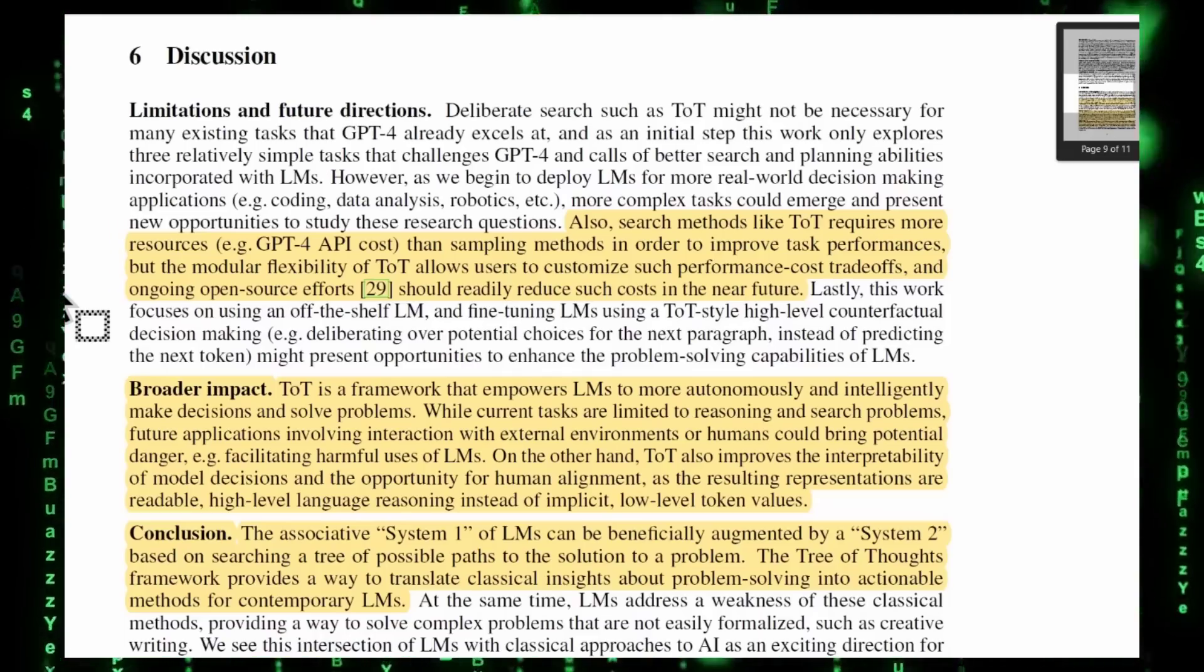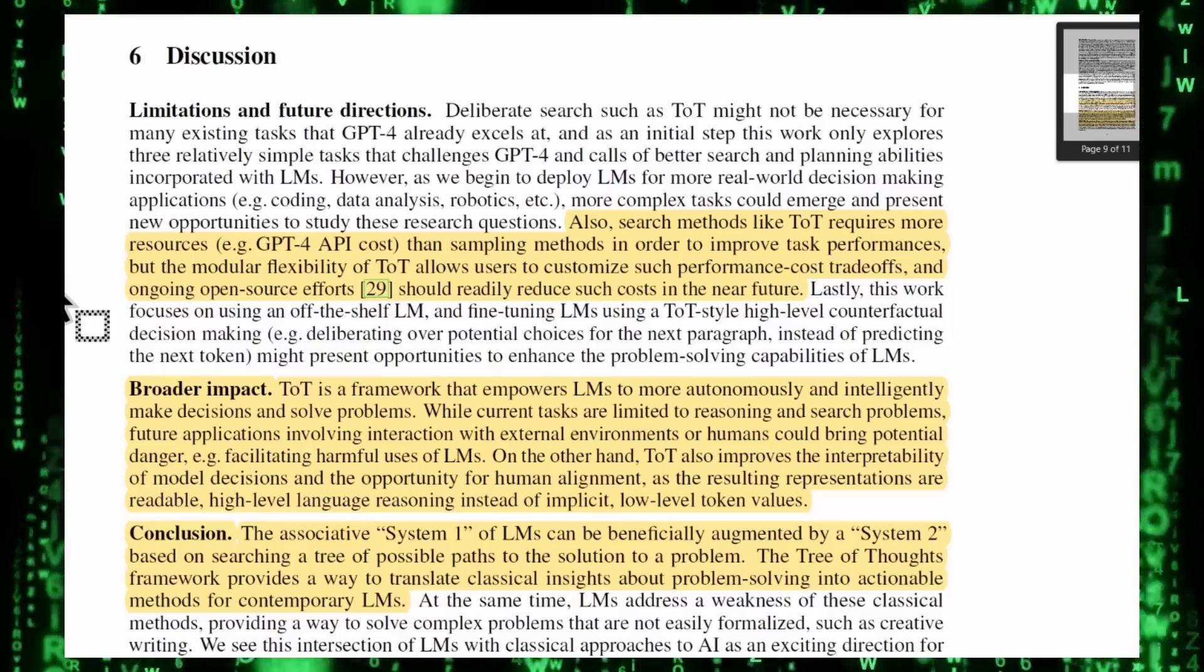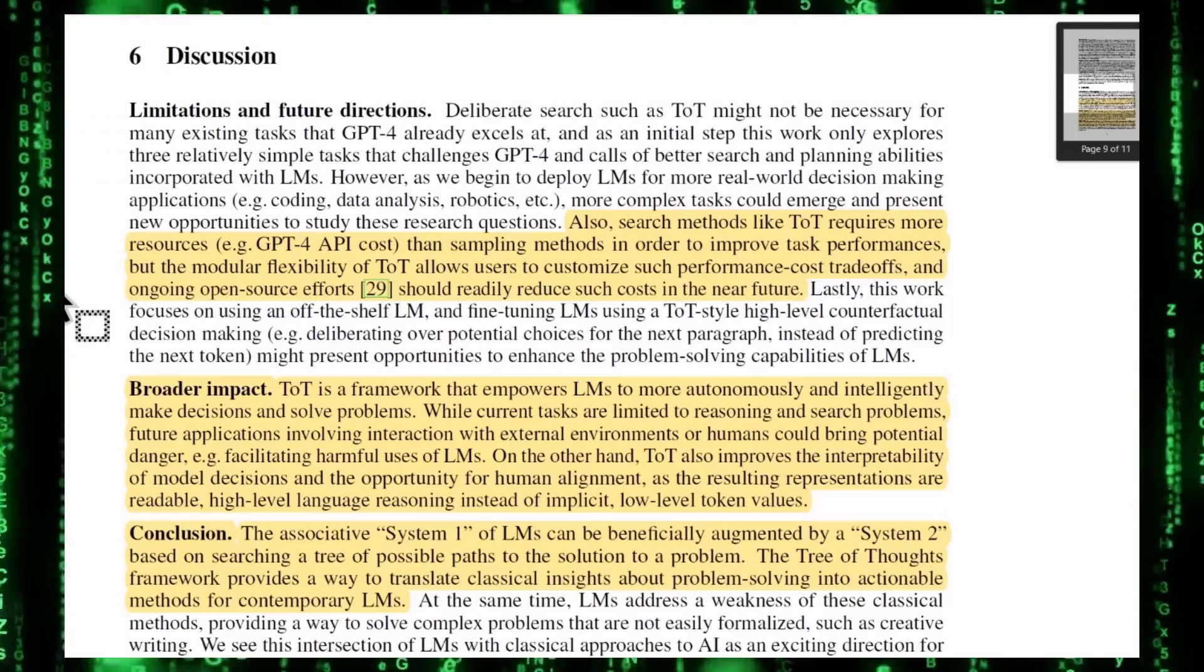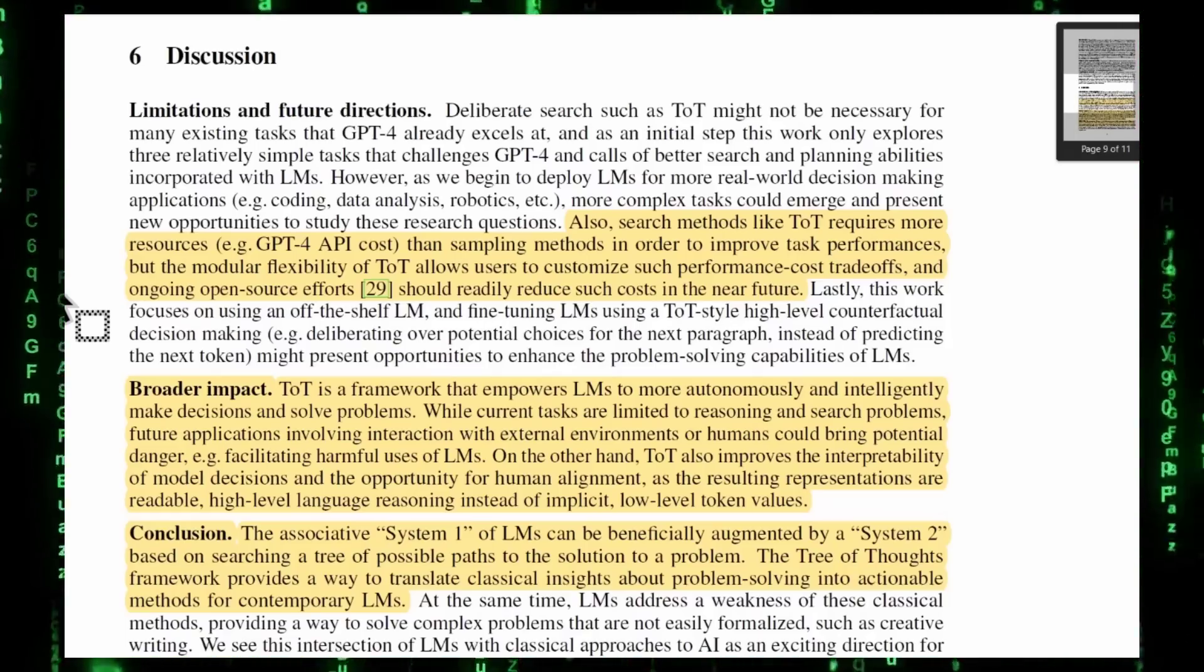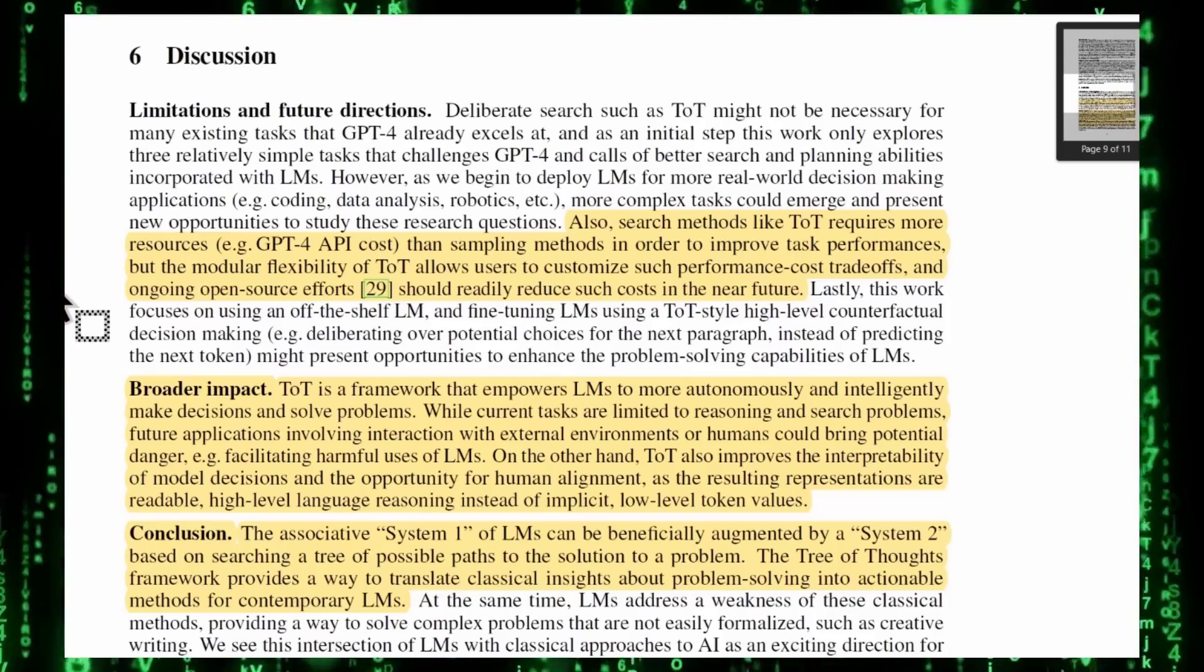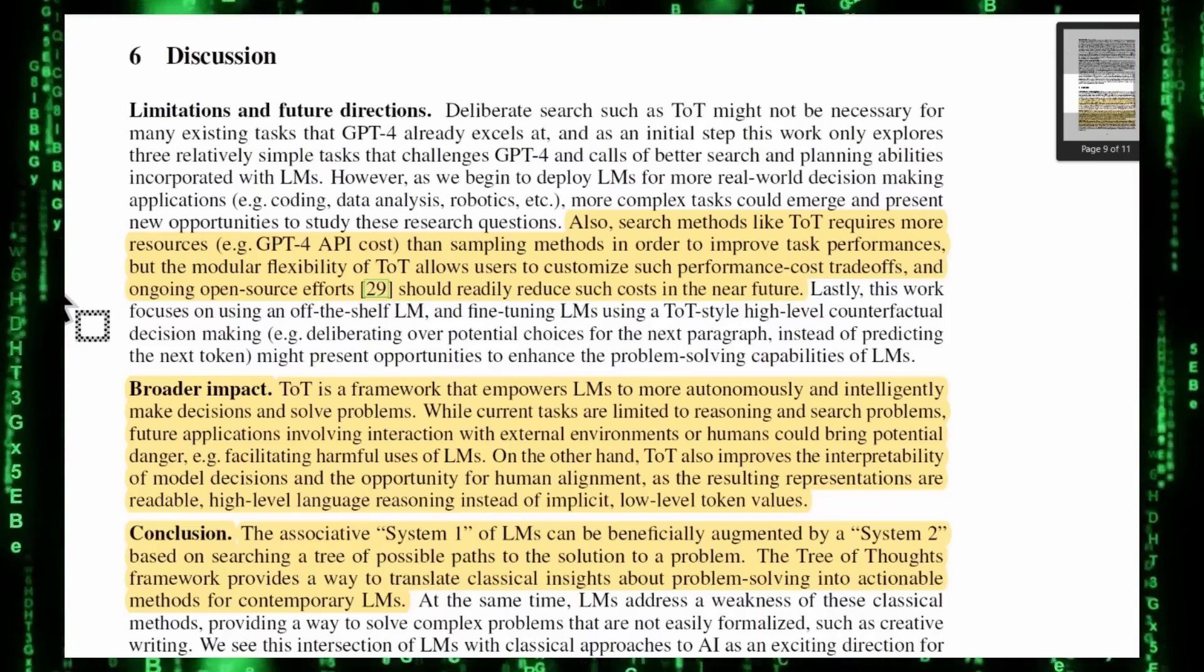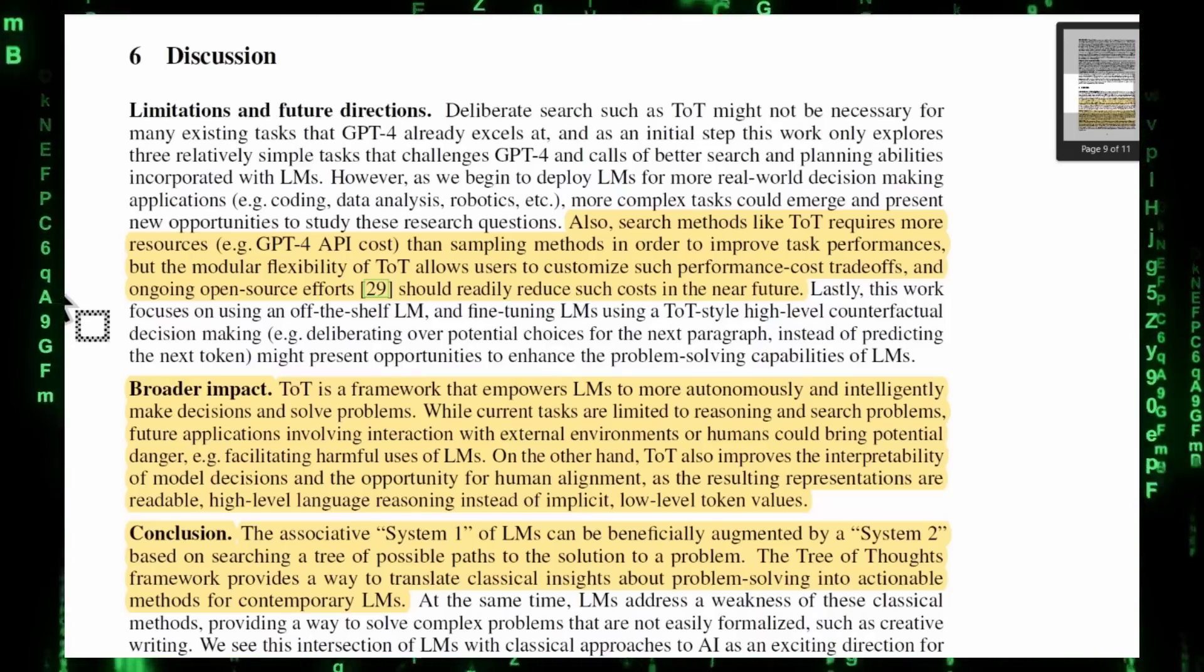On the other hand, TOT also improved the interpretability of model decisions and the opportunity for human alignment as the resulting representations are readable, high-level language reasoning instead of implicit, low-level token values. So that means that using these sort of chains and having it output its thoughts each time helps us better understand what it's thinking because we don't really know what it's thinking on the super deep level. When it spits something out, we don't fully understand how it comes to those decisions. But by asking it to show its work, to spit out its reasoning in English or natural language at each step of the process allows us to kind of see where it's going with this.